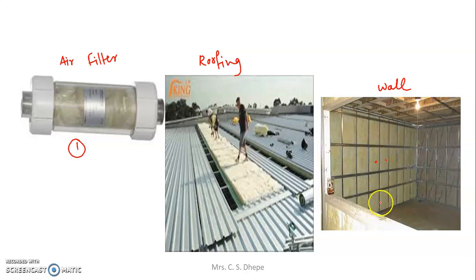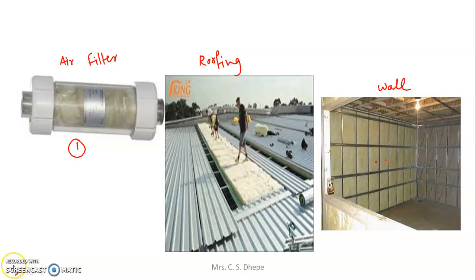This is all about glass wool. Glass wool is one example of a thermal insulating material that we have covered here. In the next video we are going to see thermocol. Thank you.